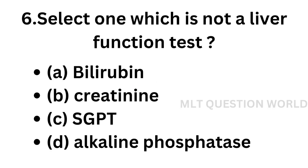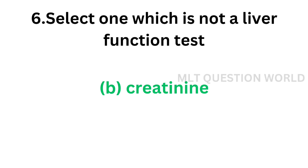Question number 6. Select one which is not a liver function test: option A, Bilirubin; option B, Creatinine; option C, SGPT; option D, Alkaline phosphatase. The correct answer is option B, Creatinine. Creatinine is a renal function test.